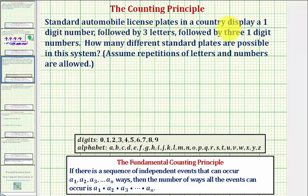Standard automobile license plates in a country display a one-digit number, followed by three letters, followed by three one-digit numbers. How many different standard plates are possible in this system? Assume repetitions of letters and numbers are allowed.